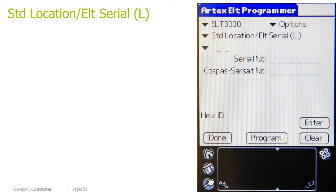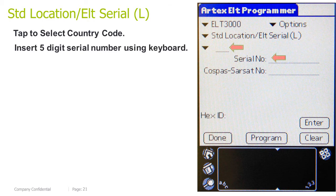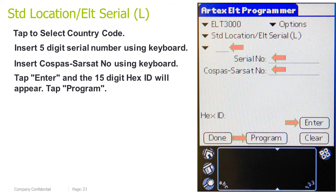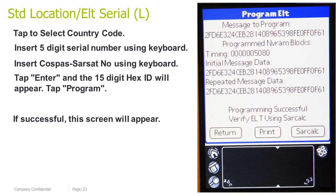Standard location ELT serial log: tap to select a country code. Insert the 5-digit serial number using the keyboard. Insert the COSPAS-SARSAT number using the keyboard. Tap Enter and the 15-digit hex ID will appear. Tap Program. If successful, this screen will appear.